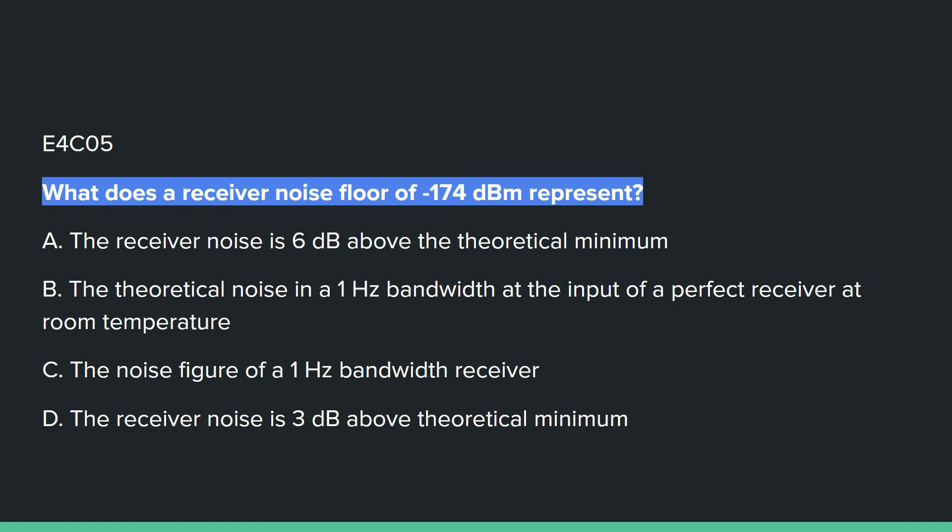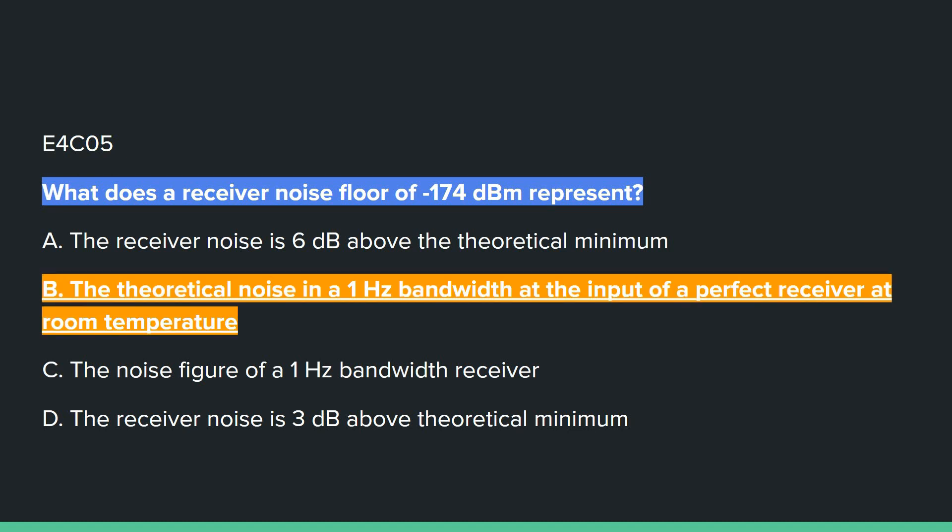E4C05: What does a receiver noise floor of negative 174 dBm represent? Answer B: the theoretical noise in a 1 Hz bandwidth at the input of a perfect receiver at room temperature.